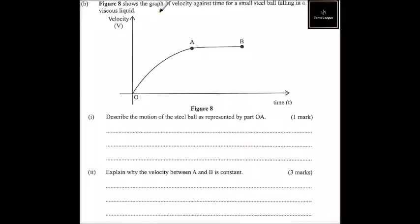Figure 8 shows the graph of velocity against time for a small steel ball falling in a viscous liquid. So we have the velocity, we have time. The graph is changing from O to A and then from A to B. Roman number one, describe the motion of the steel ball as represented by part OA. We can see that the velocity increases with time and why does that happen.